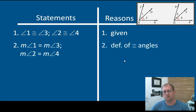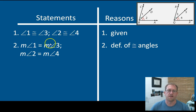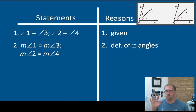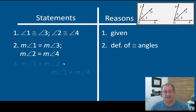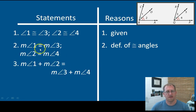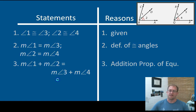Given those statements, I can tell you that if angle 1 is congruent to 3, and 2 is congruent to 4, then the measure of 1 is equal to the measure of 3, and the measure of 2 is equal to the measure of 4. This is just the definition of congruent angles — anytime you have two objects that are congruent, their measure is the same. It allows us to step into numbers. So if I add 1 and 2, and I add 3 and 4, I'll get the same thing because all these measures are individually congruent. 1 plus 2 is the same as 3 plus 4, and that's the addition property of equality.